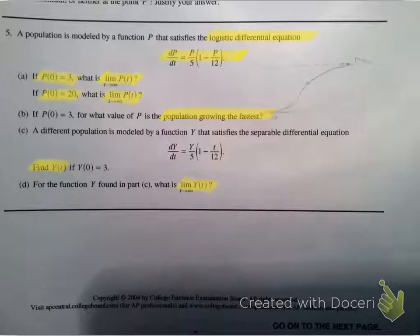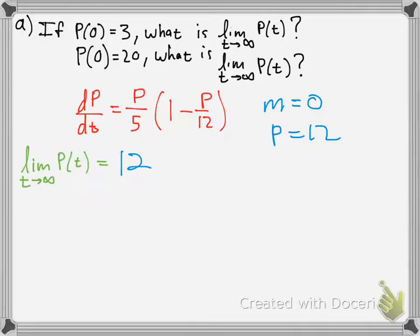This is 2004 AP Calculus BC question 5, dealing with logistic growth. Here's the rate we're given, and we're trying to find the limits as t approaches infinity, when they're growing the fastest, and find Y(t). This is the rate, so we're gonna have to integrate for that and then again find the limit.